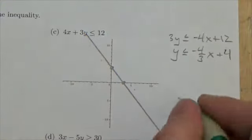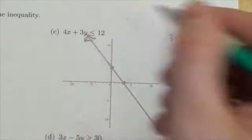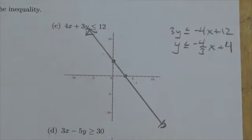Okay, so there's the line and it's a dark line. It's a solid line. I'm not going to make it a dotted line because I'm including it.